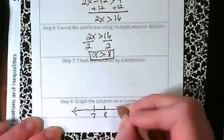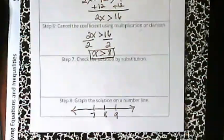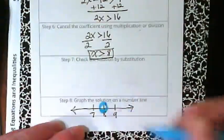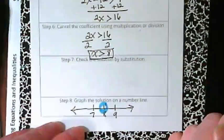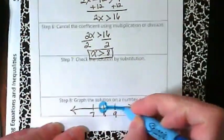7, 8, 9. Don't make too fancy of a graph. I'm going to circle the 8 but not fill it in and go which direction with my arrow? Right.